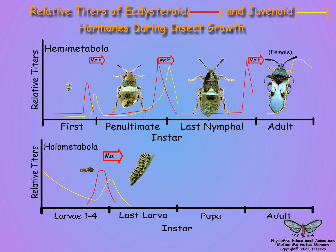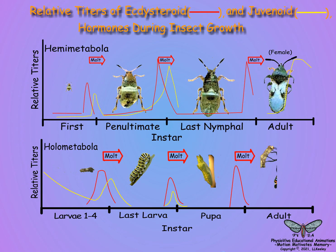When the head capsule the new larva attains the critical size for the species, it is the final larval molt, and a low titer of juvenoids present with the ecdysteroids results in a pupa. At the pupal-adult molt, juvenoids are absent when ecdysteroids are released, and the imaginal discs are activated to undergo growth to form adult structures, and adult genes are expressed in the epidermal cells to form adult cuticle.